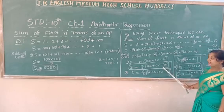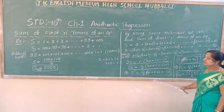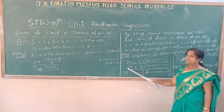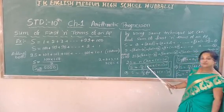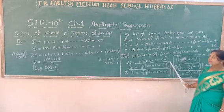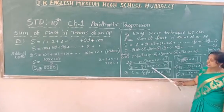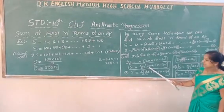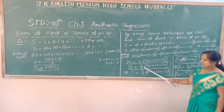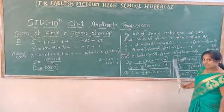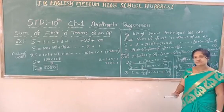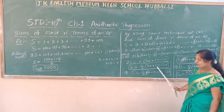When you know the value of a, n, and d, you can easily find out the sum of n terms of an AP using the formula Sn equals n by 2 into 2a plus n minus 1 into d. We have to use this formula whenever we need to find the sum of n terms of an AP.